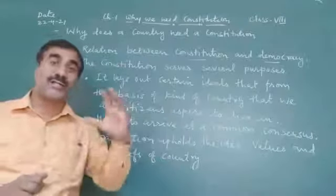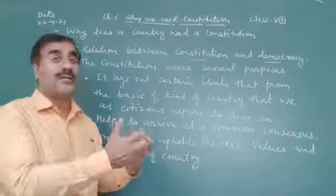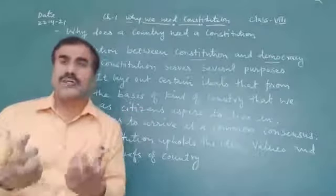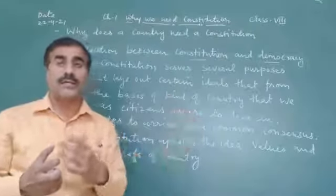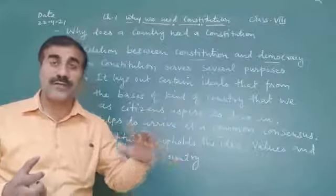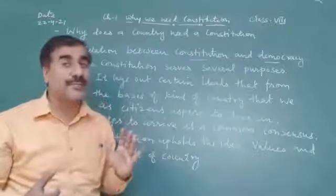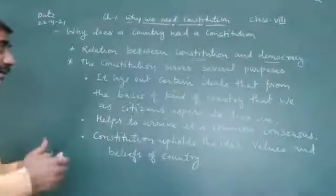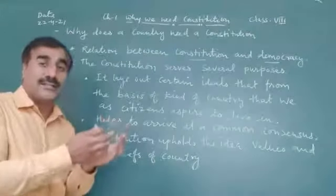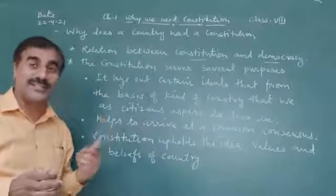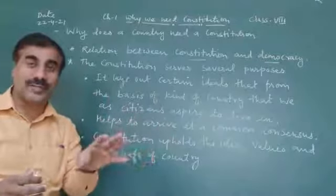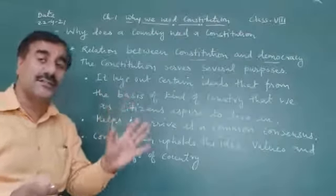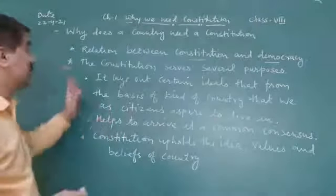So, the first point — why we need a Constitution — is the relation between the Constitution and the nation. Suppose any nation claims to be democratic, but it is not giving equality for all at a practical, ground level, not following the policies written in the Constitution. Such a nation we cannot call democratic. So it is a healthy relation between Constitution and democracy. A democratic Constitution is required. It specifies what punishments exist for those who break the laws, what rights are given to citizens, whether freedom is given or not. These ideas are all written inside the Constitution.